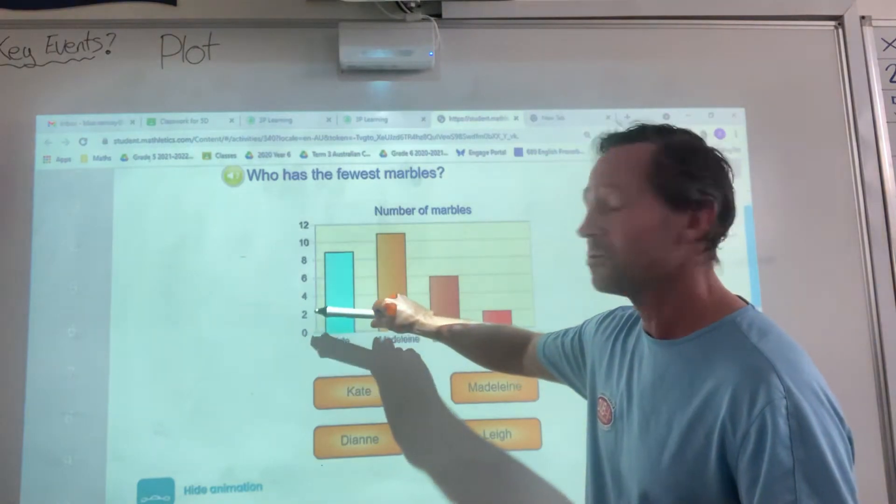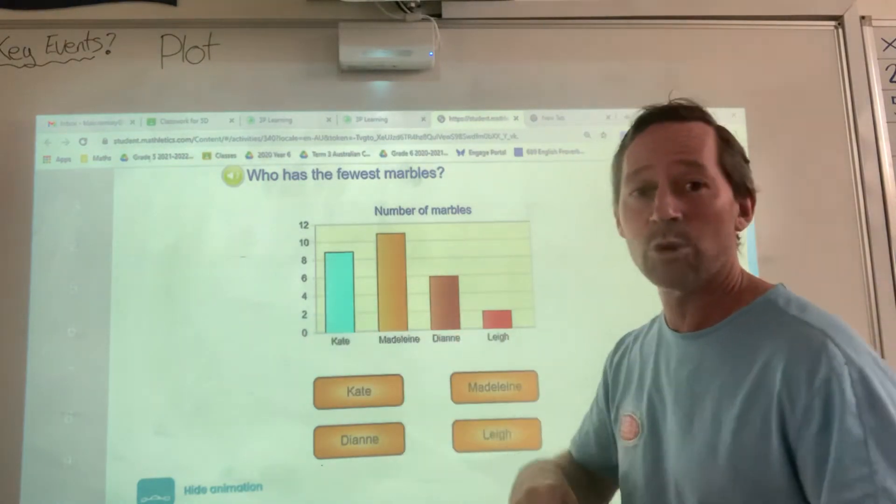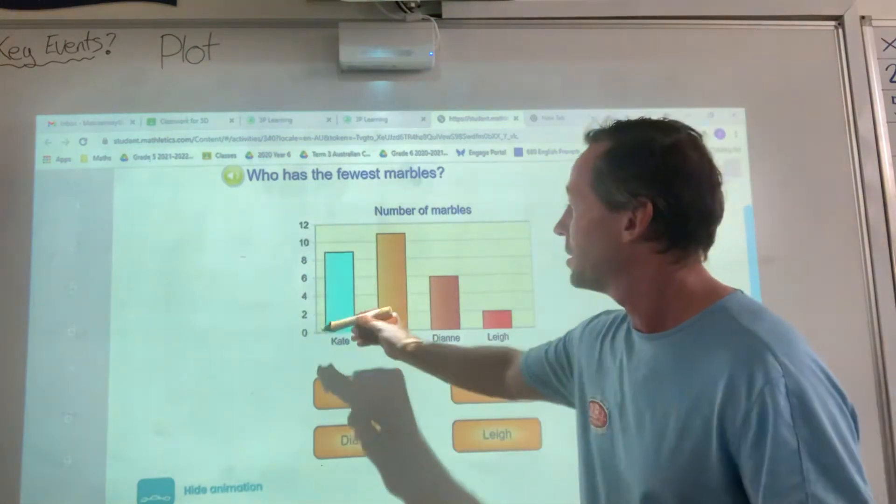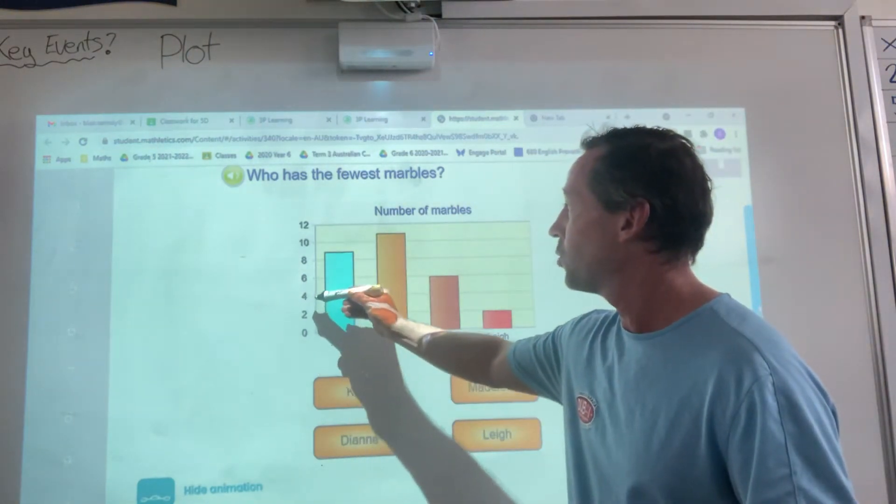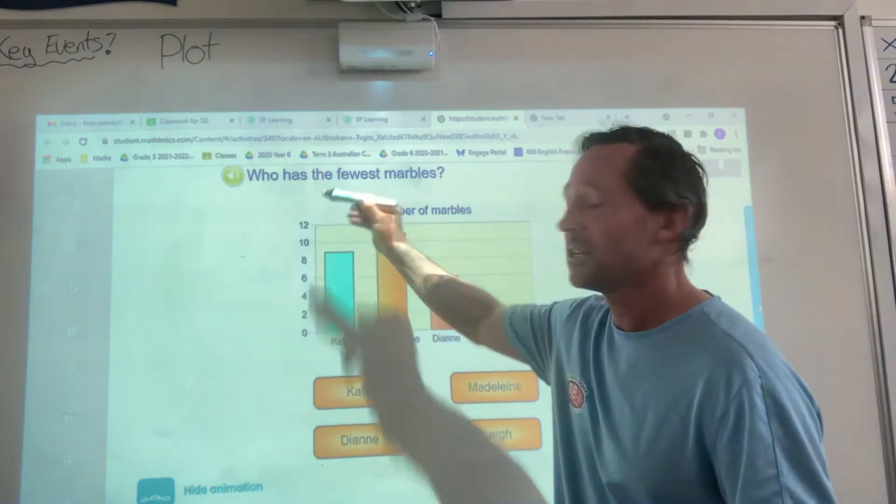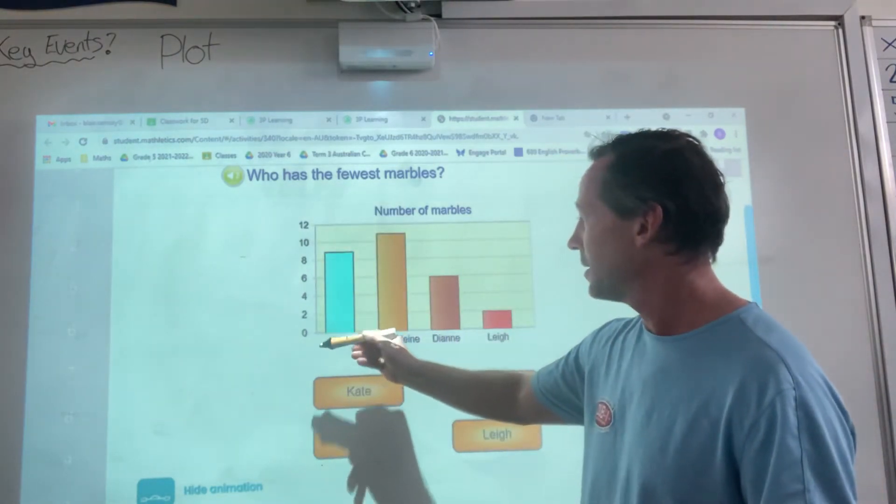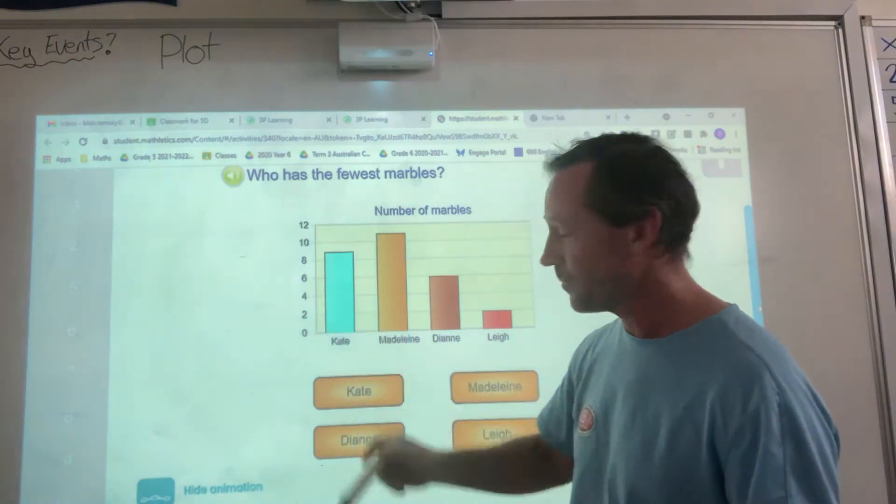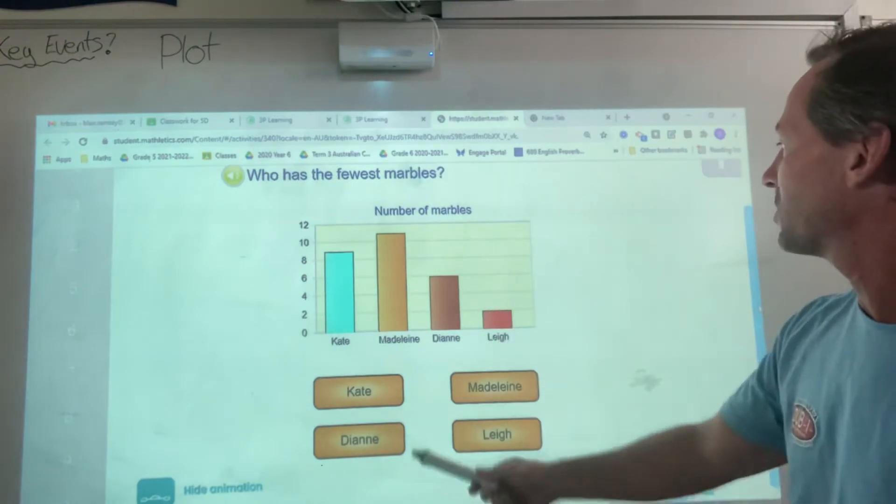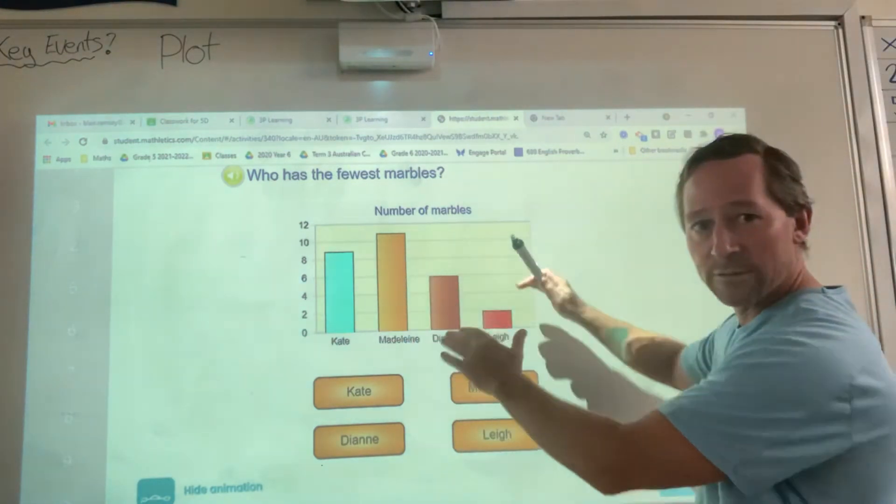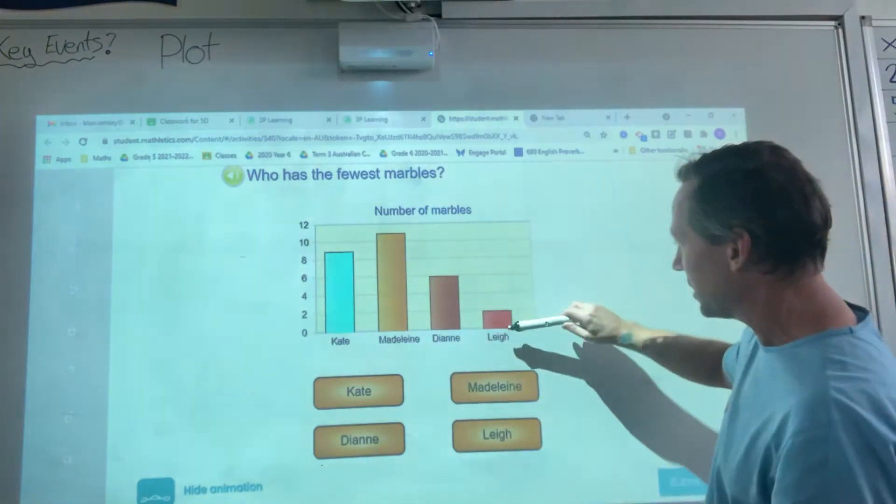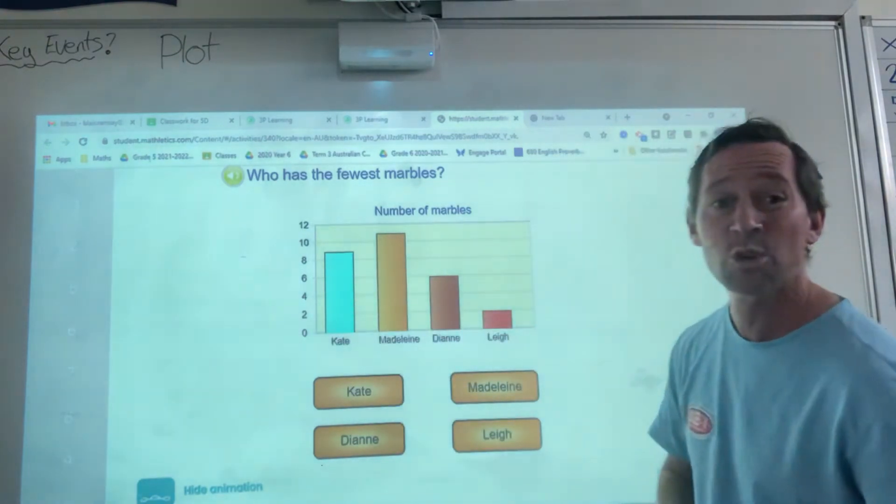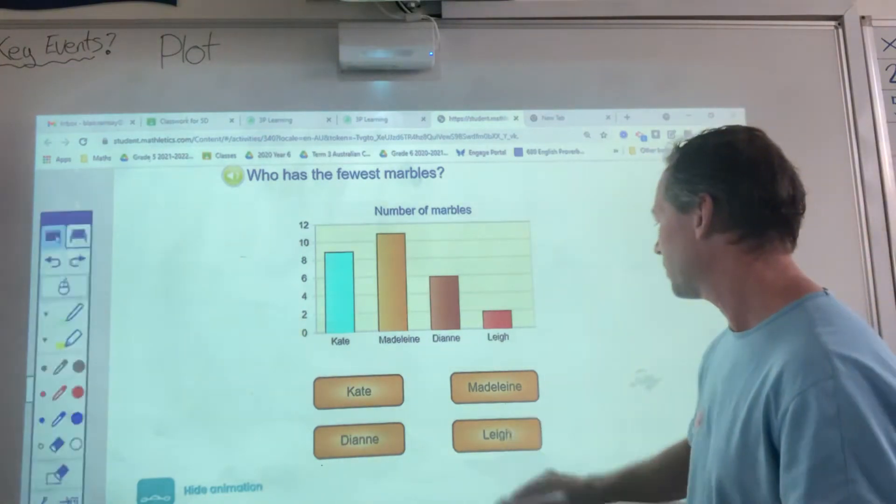And they're going up in 2s. A fancy word would be they're going up in increments of 2. So, 0, 2, 4, 6, 8, 10, 12. Now, if someone had just 1, it would be in between 0 and 2. So, let's look at this. Who has the fewest marbles? Clearly, you can just look at it. Who has the smallest amount? And you can see that is Lee. Lee has, if I pull across, 2. So, Lee is our person here I'm going with.